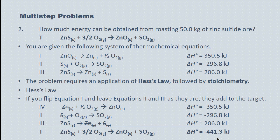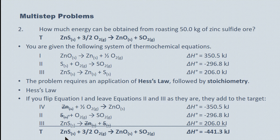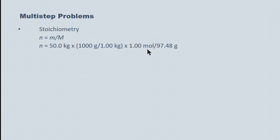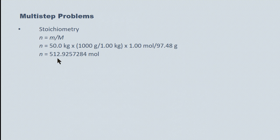The question is, how much energy is required to roast 50.0 kilograms? So the second piece then is to convert that mass value into moles. So we take the 50.0 kilograms, we convert it into grams, and then we multiply it by one mole over the molar mass, and that gives us 512.925 moles of the zinc sulfide.